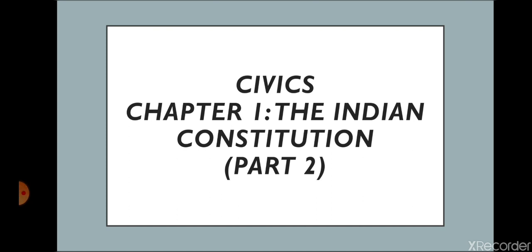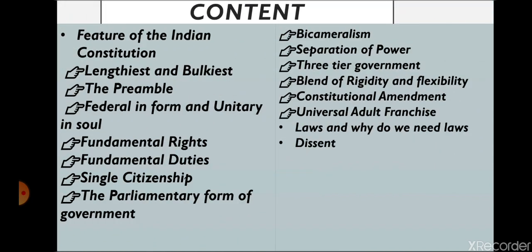Hello everyone, good morning. I am back with the first chapter of civics — the Indian Constitution, Part 2. This is the last part of this chapter. In the previous lecture we discussed the basics, and now we are going to learn the features of the Indian Constitution. The content includes: lengthiest and bulkiest, preamble, federal in form and unitary in soul, fundamental rights, fundamental duties, single citizenship, parliamentary form of government, bicameralism, separation of power, three-tier government, blend of rigidity and flexibility, constitutional amendment, universal adult franchise, laws and why we need laws, and what is dissent.